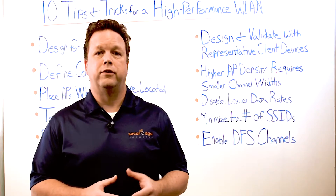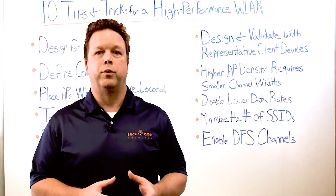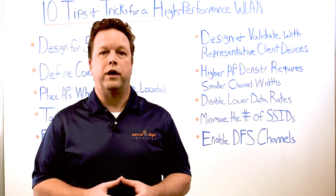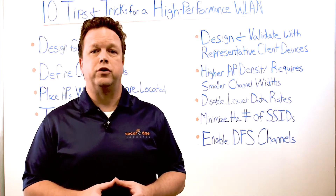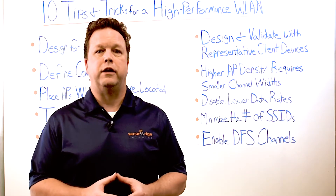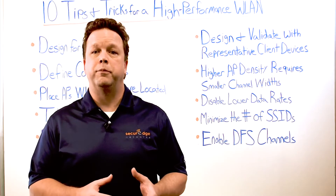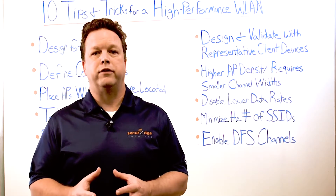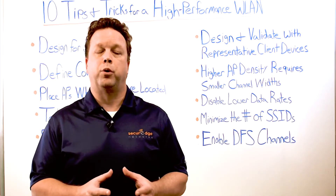Minimizing the number of SSIDs is a tip we always use in the field. Network overhead increases with each SSID that is broadcast, and we recommend no more than 4 SSIDs in a given RF domain. Make sure your wireless LAN solution supports multiple authentication methods per SSID so you can collapse SSIDs based on mutual supported authentication mechanisms. In some situations, the overhead from all SSIDs being broadcast consumes so much airtime that remaining bandwidth is too little to support client operations.